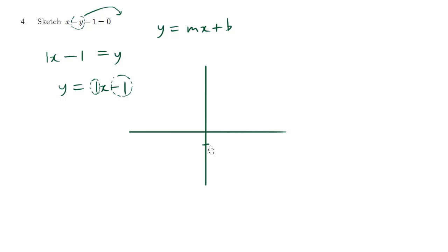The y-intercept is negative one, which is over here. It's going to cross this axis. It's negative one. And the slope is one. So that means that it's going to be at a 45 degree angle like this. Let's go a little bit lower. Like this. Because for every one unit we go this way, we go up one unit. For every one unit you go this way, you go up one unit.